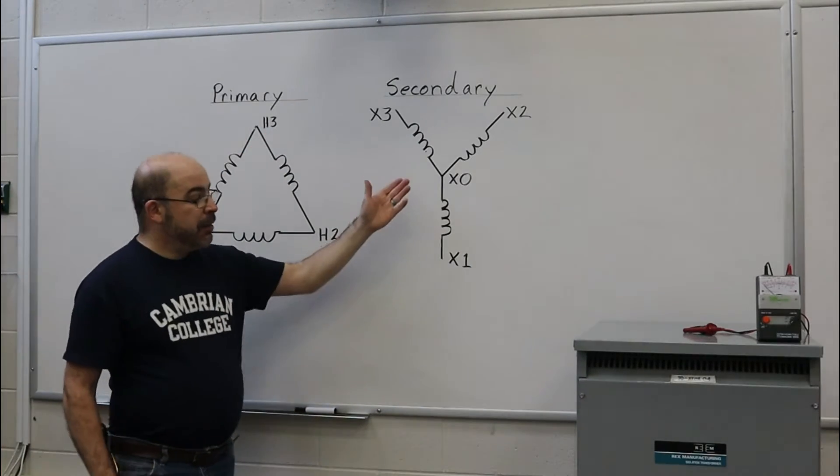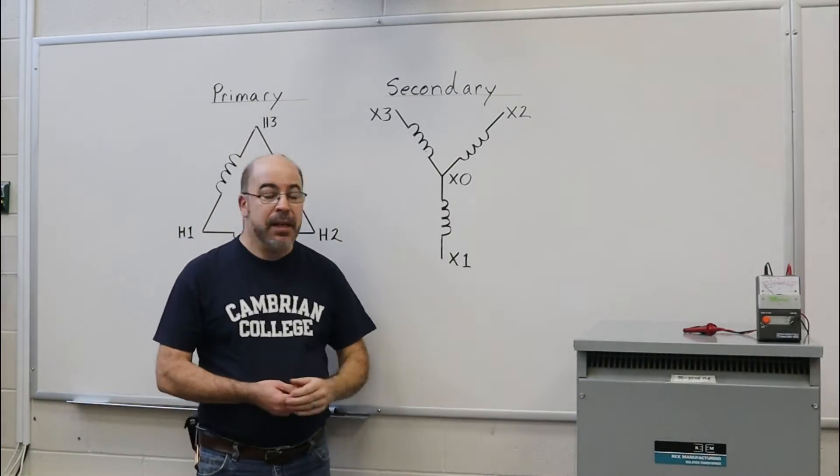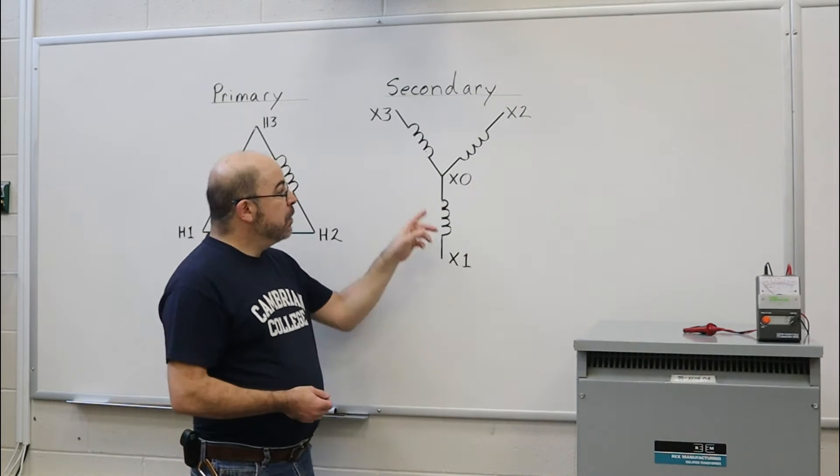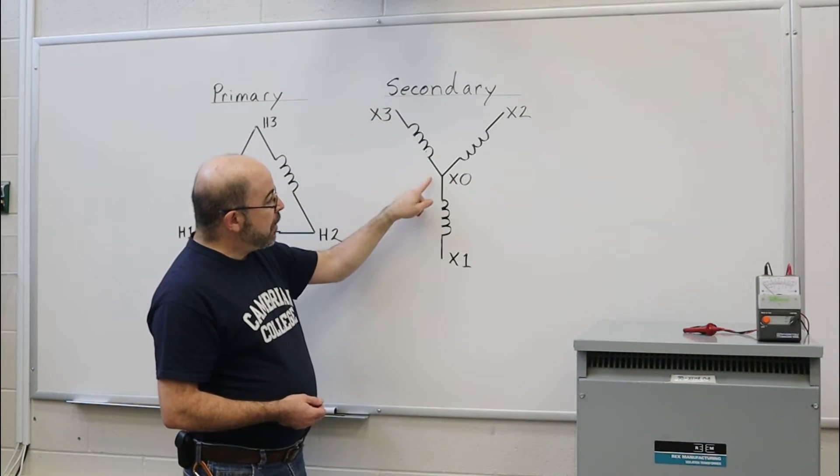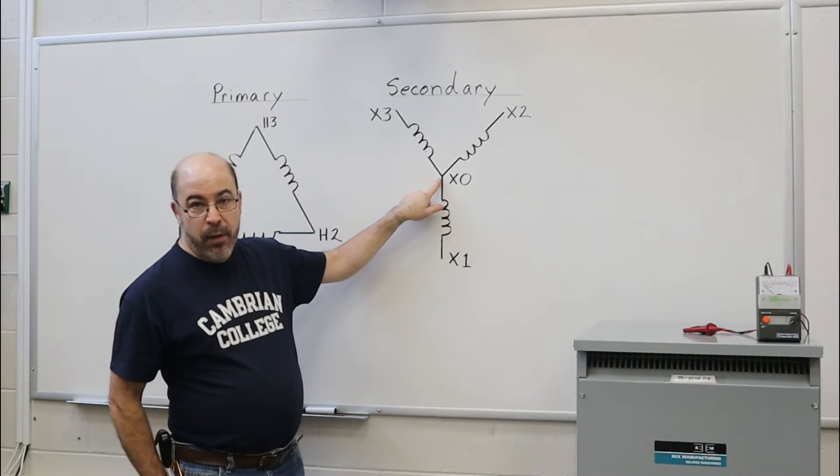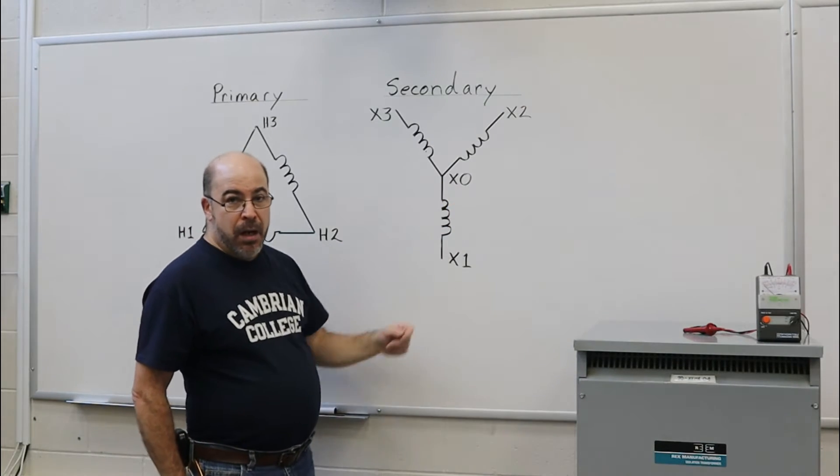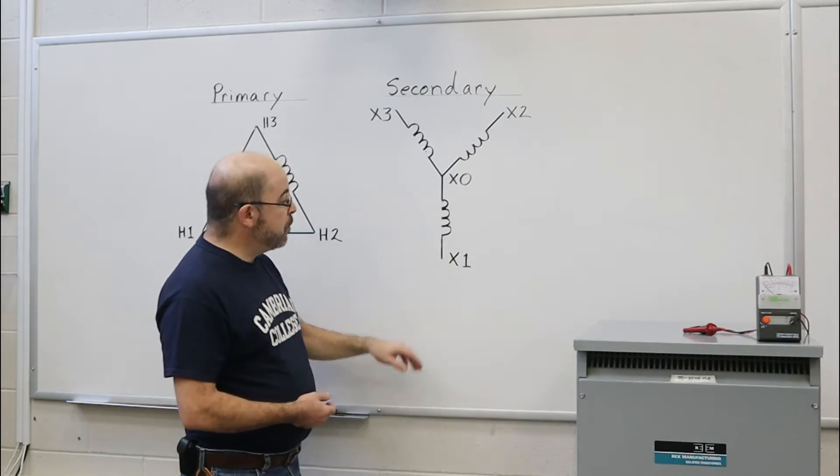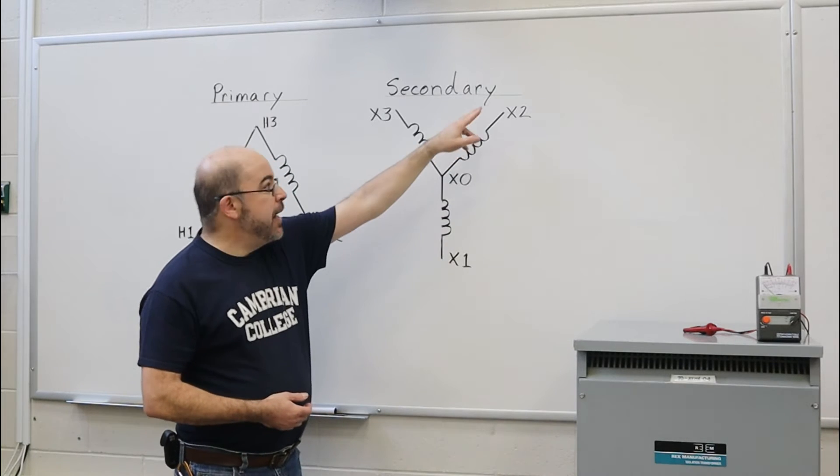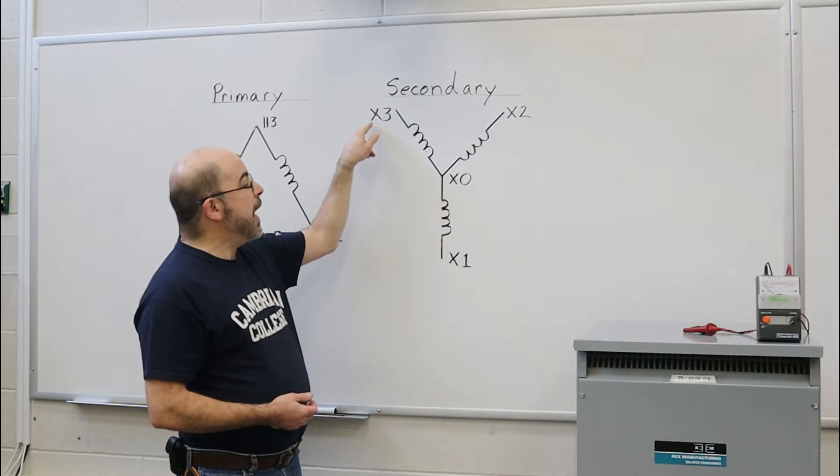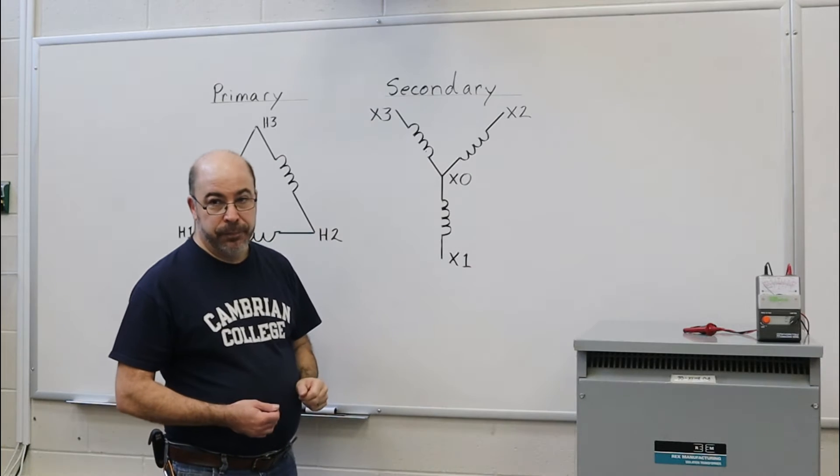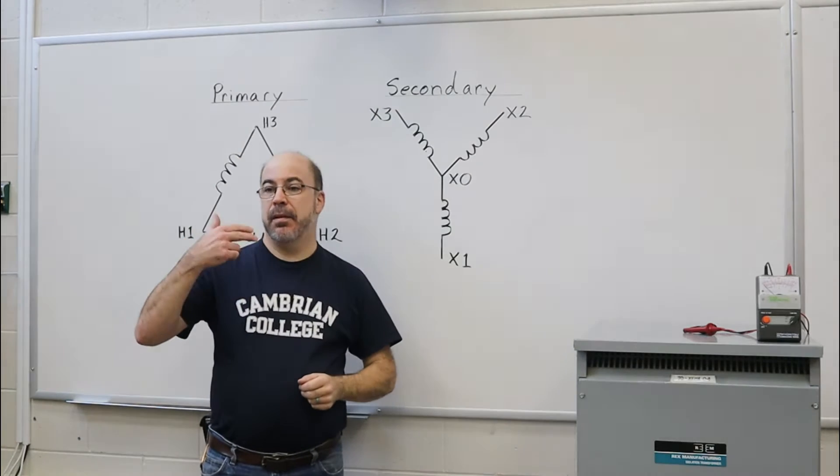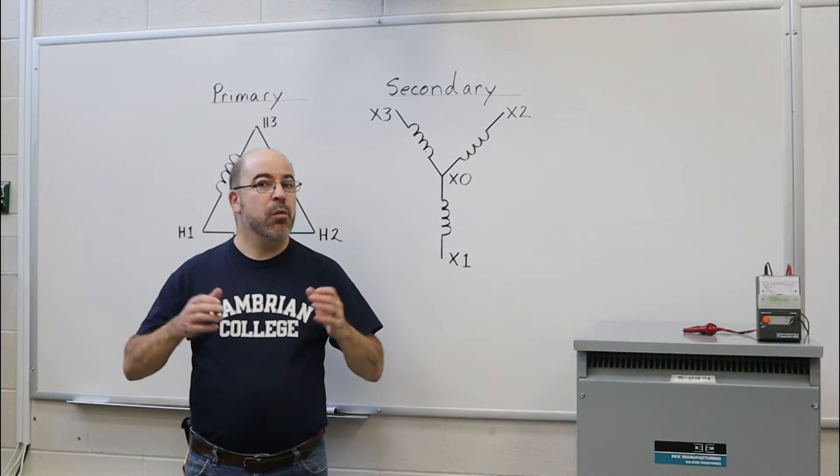Now on the secondary side, we're going to perform the same thing. But the secondary is Y connected. Now all three of the windings are actually connected together at a central point called X0. All I'm going to do is test between X1 and X0, X2 and X0, X3 and X0. And that first part or that first procedure will have been completed.